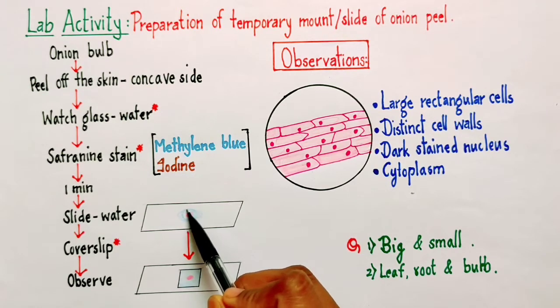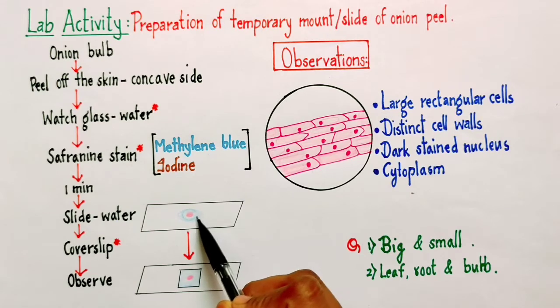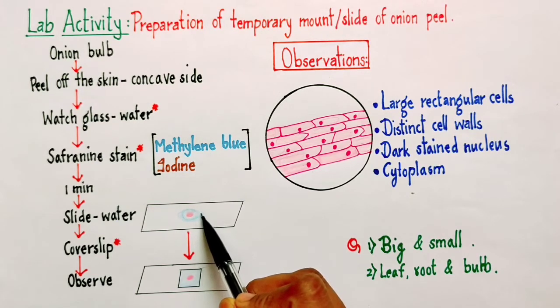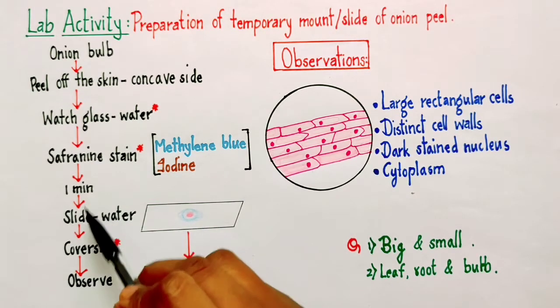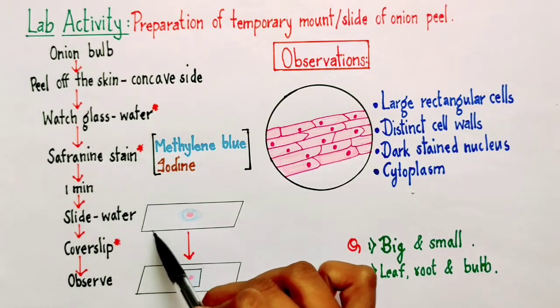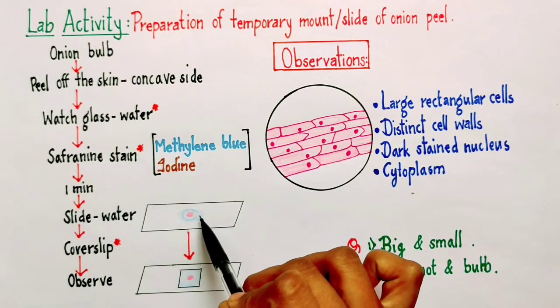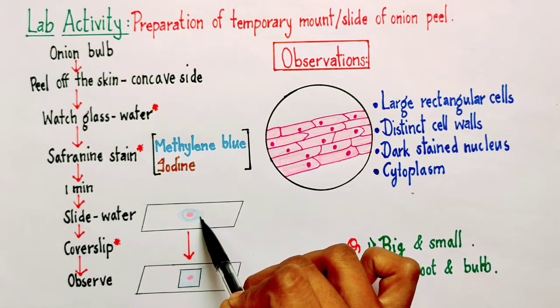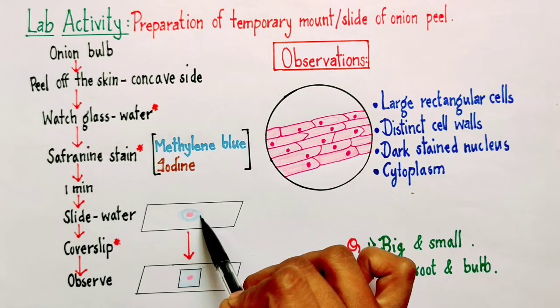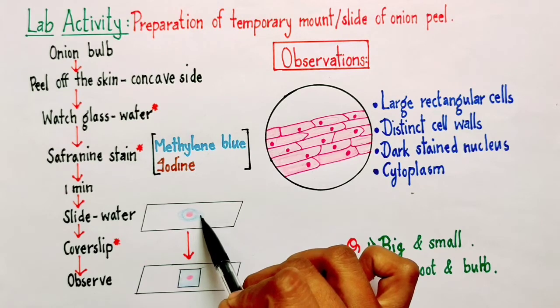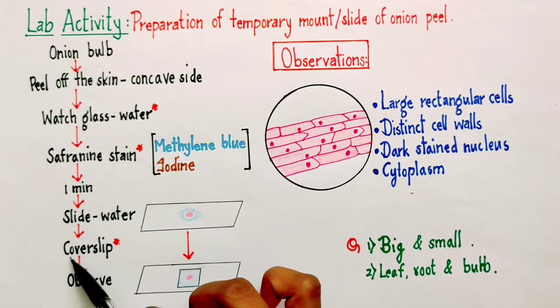This is my glass slide and just consider this pink thing to be the peel of onion which we have taken, and this blue color is water. We are transferring into a glass slide and again that glass slide is containing a drop of water. Again the purpose of water is to keep the cells hydrated.